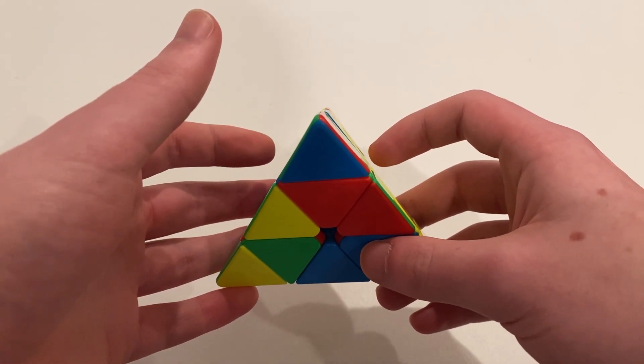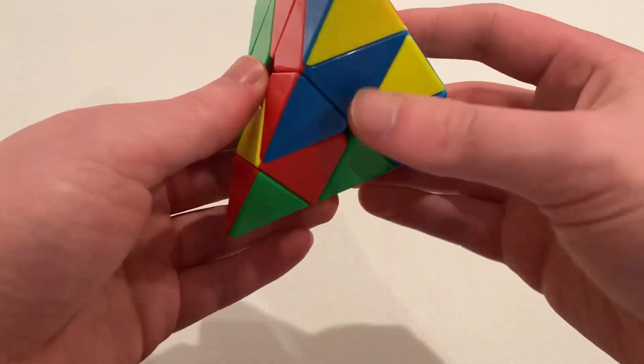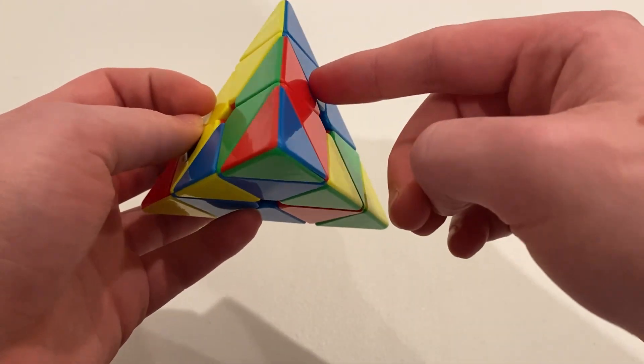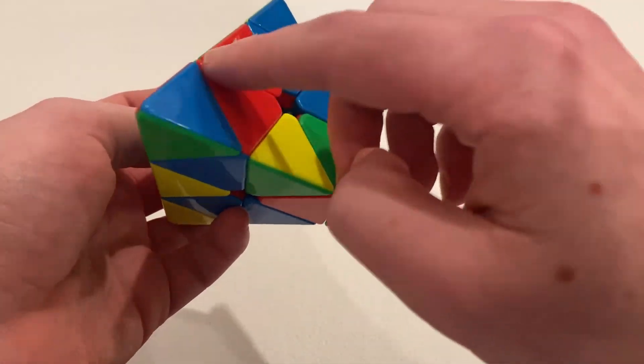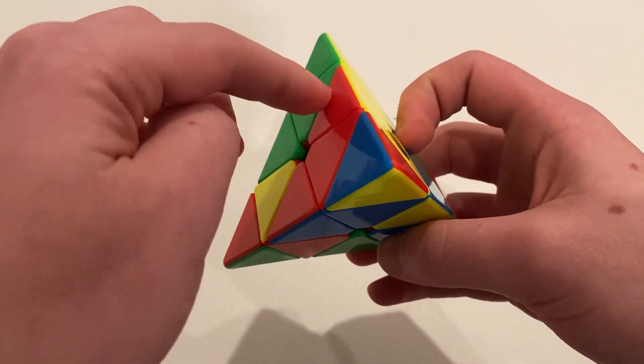All right, so this is the scramble. The first thing I saw was just that there was a lot of blocks, but quickly I realized that there is a two-move red layer by building this block here with this bit and finishing it with this big bar.